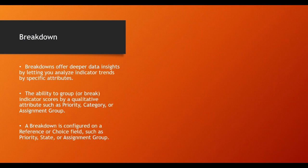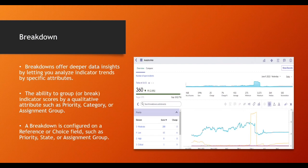A breakdown is configured as a reference field like assignment group, a choice field like category or priority. For example, in the analytic hub for number of open incidents, when you apply priority as a breakdown, you can see breakdowns like moderate, low — and the scores change accordingly showing number of low incidents. That is what a breakdown is.